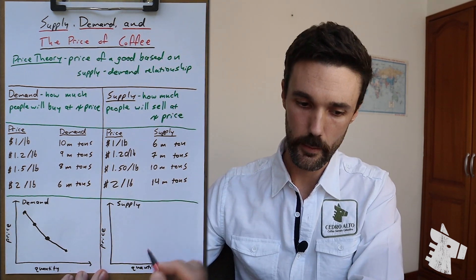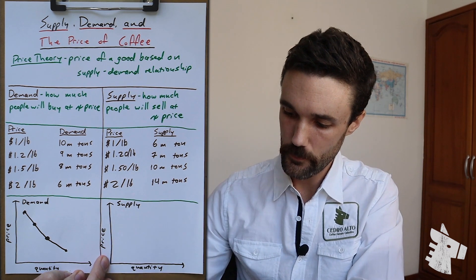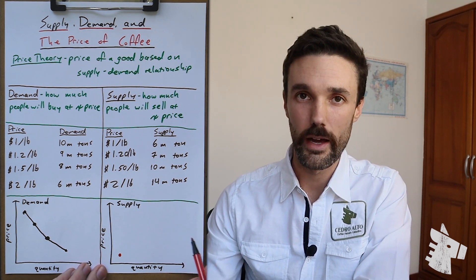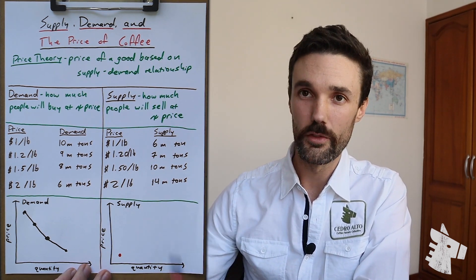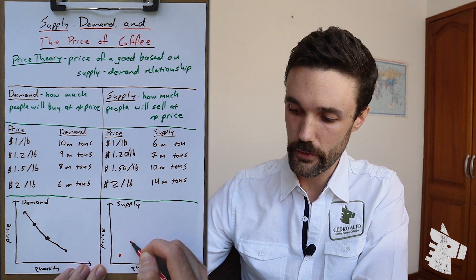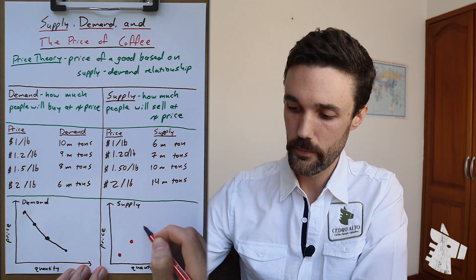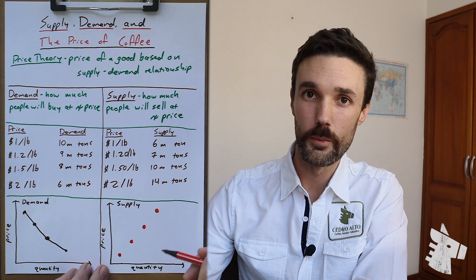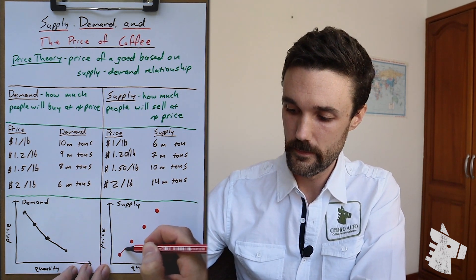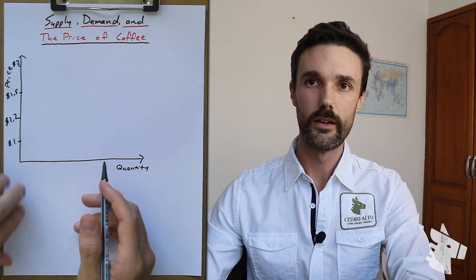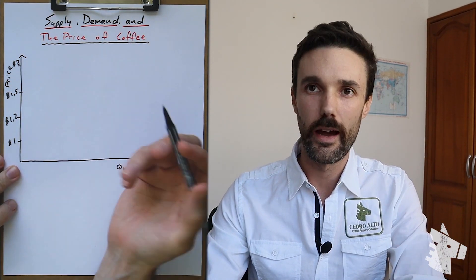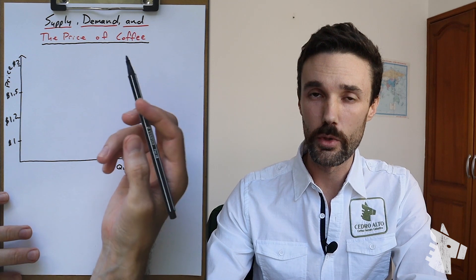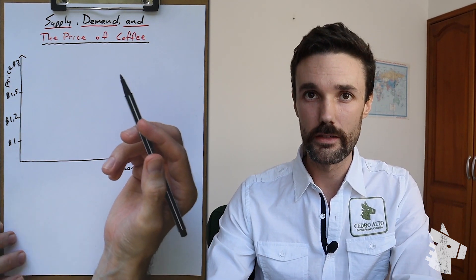Now let's take a look at supply on the diagram. If the price is fairly low, the quantity offered will also be fairly low, as selling at that price will be relatively less attractive to sellers than higher prices. If the price were a bit higher, the quantity offered would theoretically also be higher, and so on. So we can see that the higher the price, the more quantity will be offered. To summarize: higher price, less demand; lower price, more demand. Higher price, more supply; lower price, less supply.